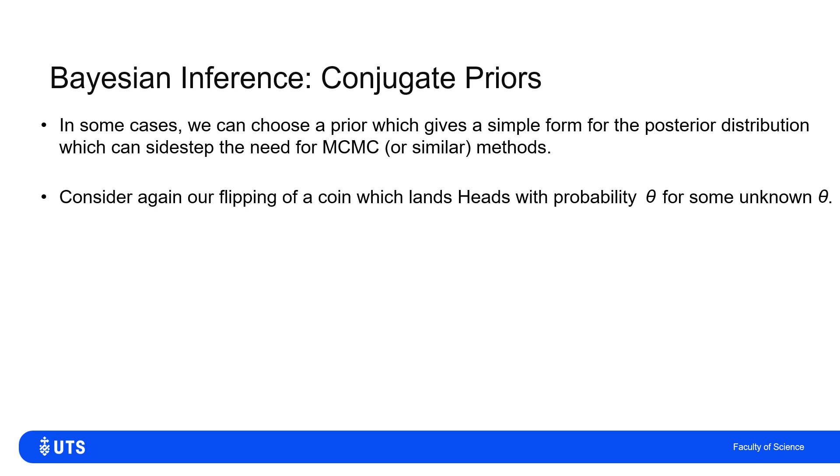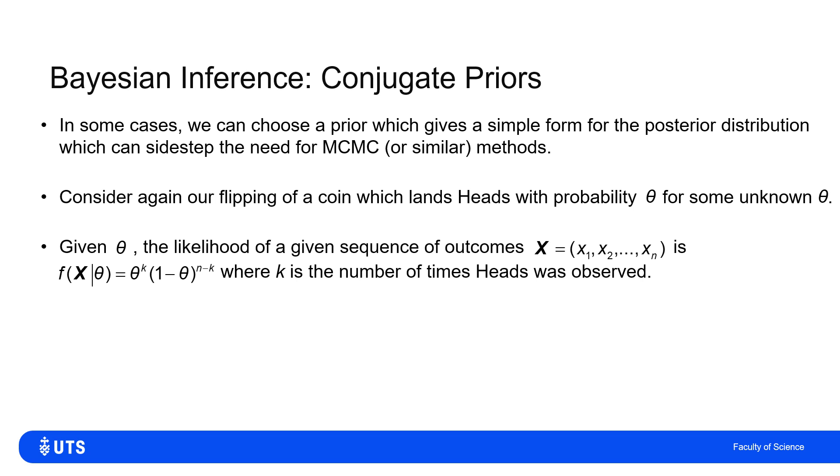If we come back to the coin flipping example where we've got a coin that lands heads with probability θ on each flip independently for some unknown θ, the likelihood of my sample of heads and tails will be of this form: θ^k times (1 - θ)^(n - k). If I flip the coin n times and I get k heads and n minus k tails, my likelihood will look like that.